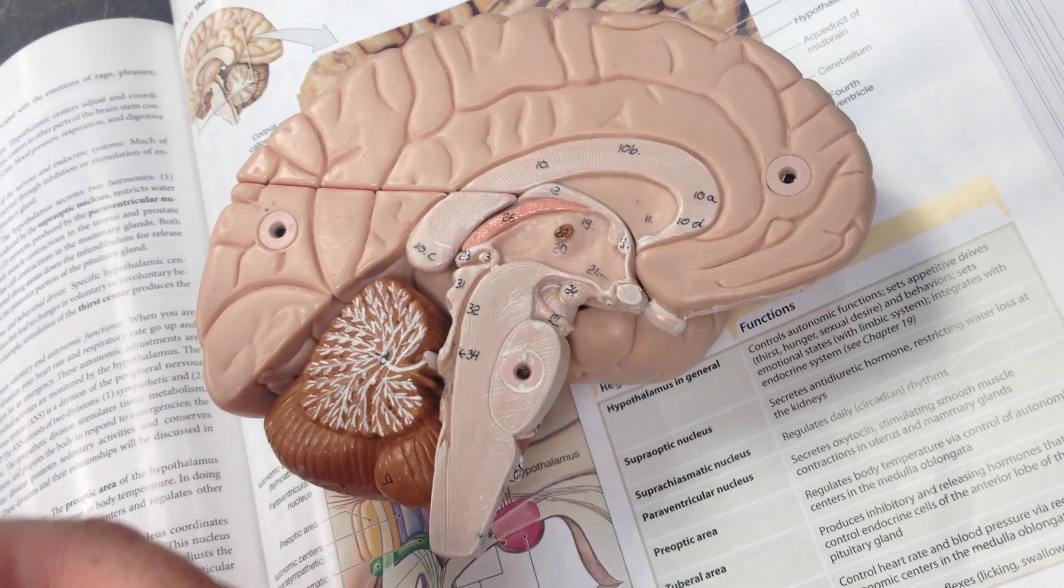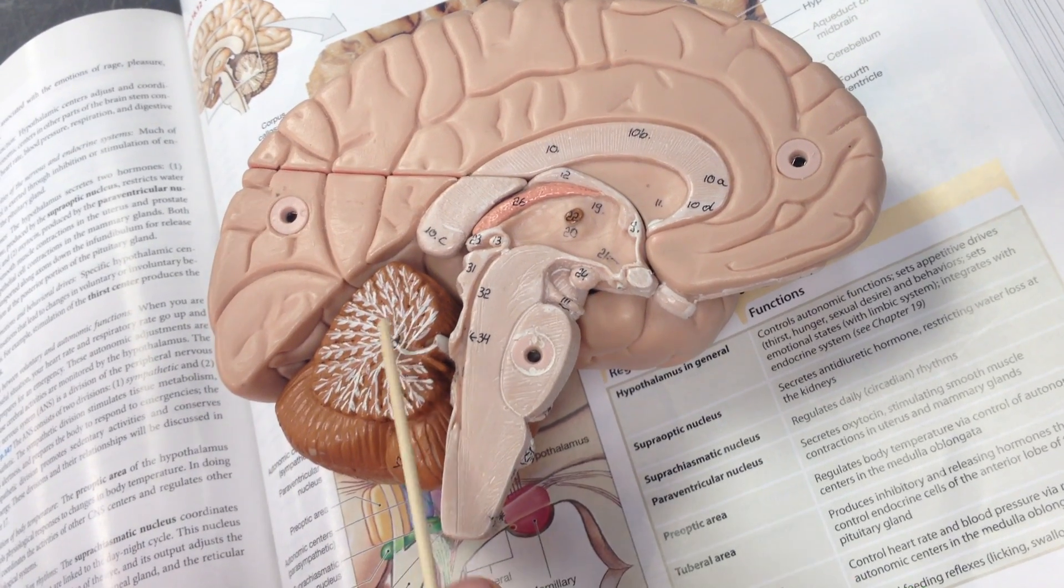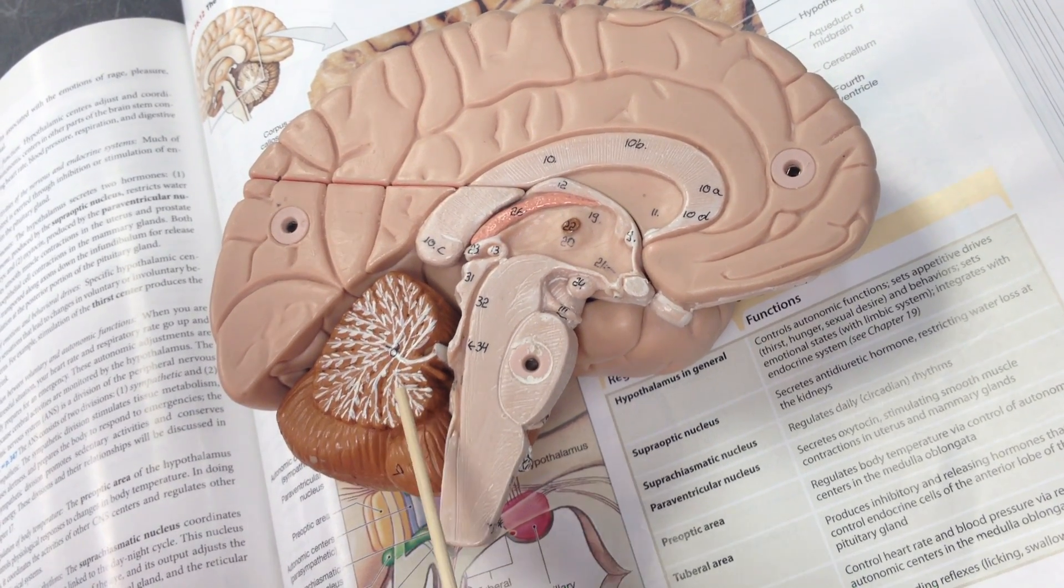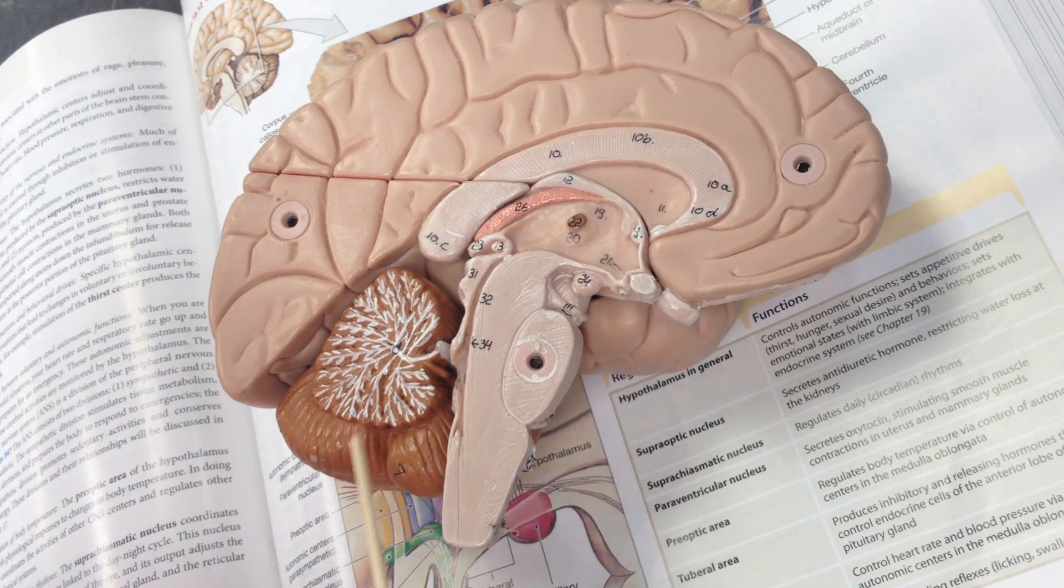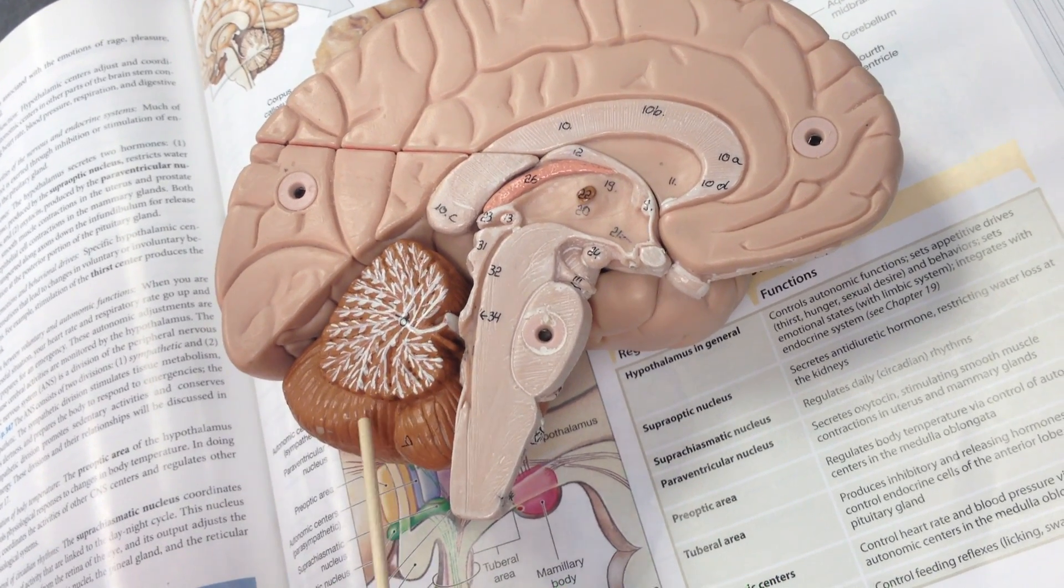The arbor vitae is the branches, they look like trees. The folia is the little valleys of the gray matter.